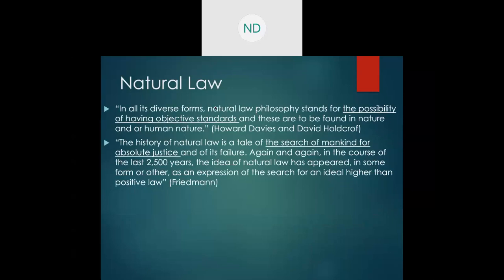To conclude, the essence of the difference between legal positivism and the natural law school is about the necessary relationship between law and morality. The natural law school believes there exists a certain type of necessary relationship between law and morality. However, for legal positivists, their belief in the separation thesis holds that law and morality can exist separately, without any necessary relationship between them.